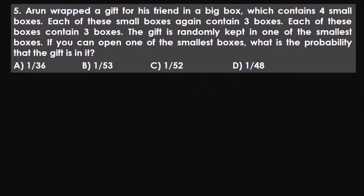Pause the video, try to solve it, and then unpause. The answer is A, one by 36. If you got that, amazing. Don't get intimidated by the size of the question — the solution is smaller than the question. Arun wrapped a gift in a big box containing four small boxes, each containing three boxes, and each of those containing three smaller boxes.